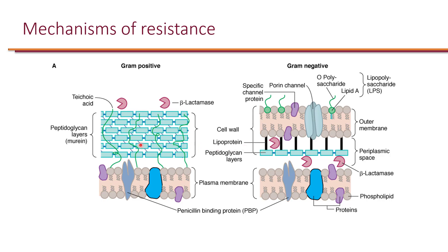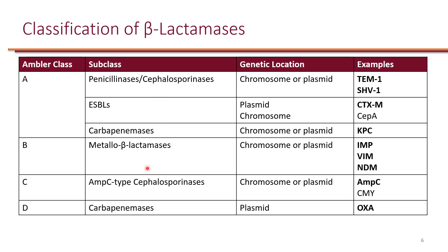Beta-lactams prevent the formation of peptidoglycan, so their site of action is where peptidoglycan is. For bacteria to produce beta-lactamase and break down beta-lactams, the enzyme must be made near the peptidoglycan layer. In gram-positives, this is outside the cell, so beta-lactamases are lost to the environment. In gram-negatives, beta-lactamases are retained in the periplasmic space between the two membranes, making production more cost-efficient. Therefore, beta-lactamase production is far more common in gram-negatives.